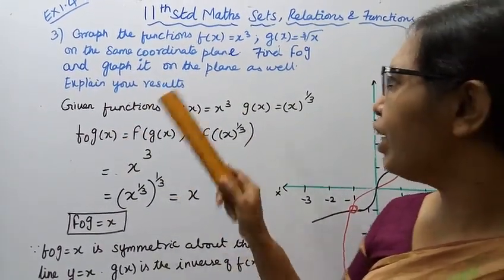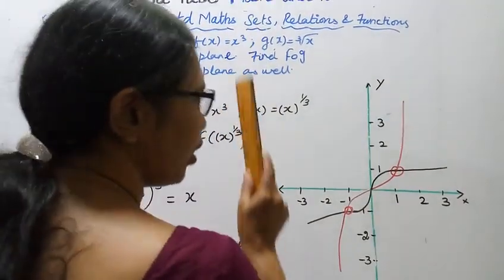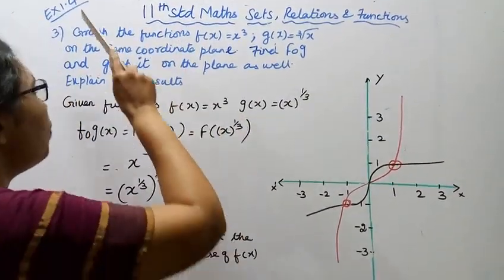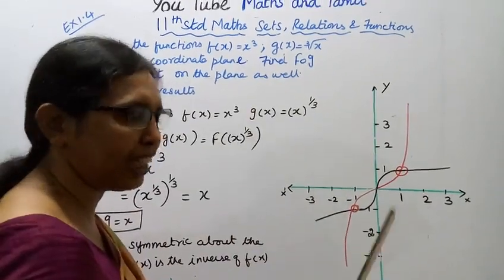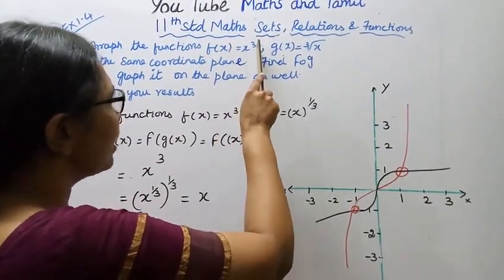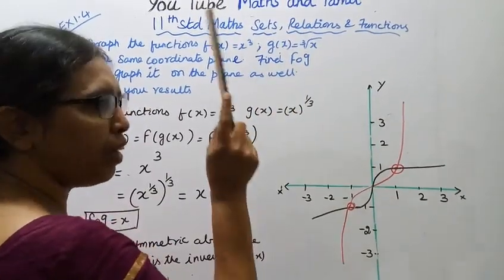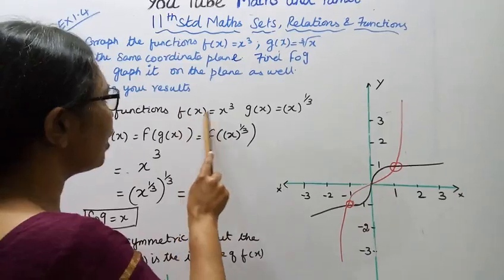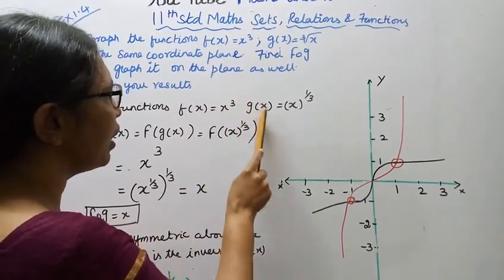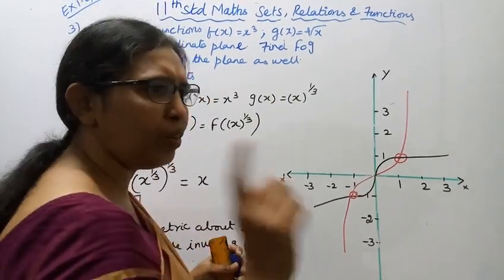Now graph the functions f(x) = x³. First sum, second sum: f(x) = x³, then f(x) = x^(1/3). Given functions: f(x) = x³, g(x) = x^(1/3).